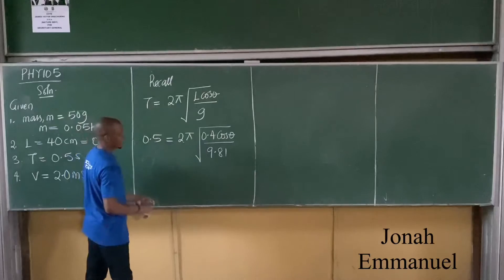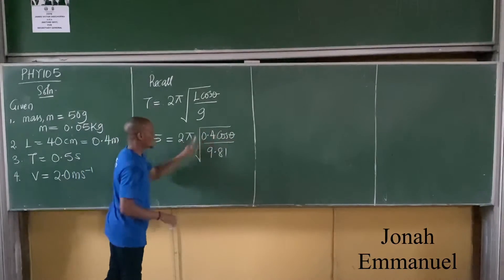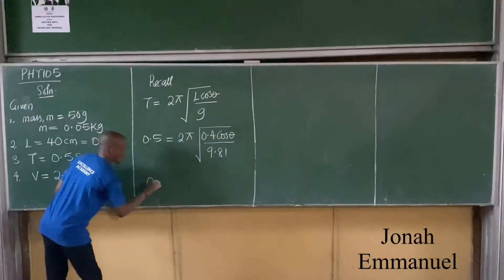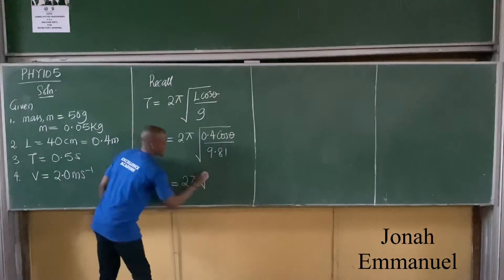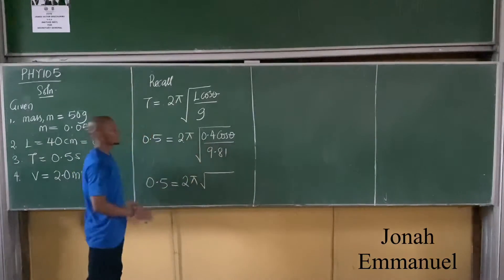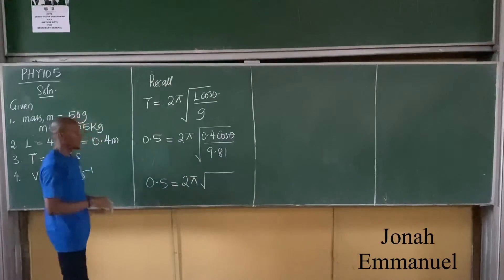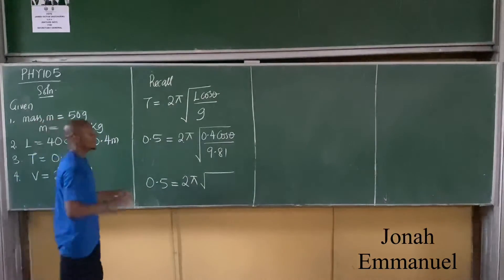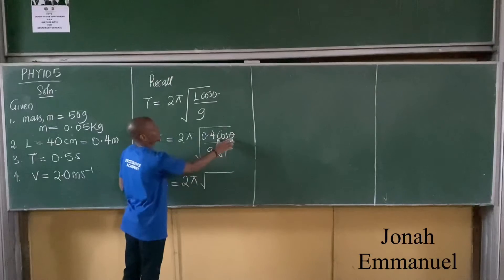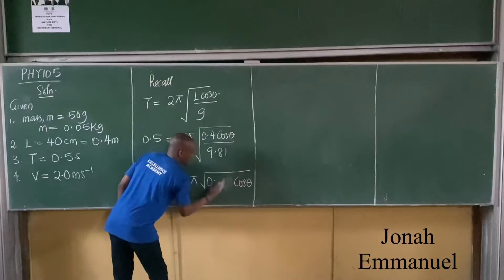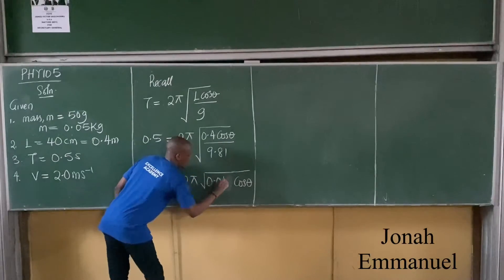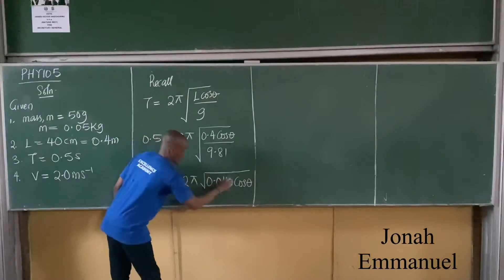I have that 0.5 is equal to 2π square root of L, which is 0.4, cos theta all over 9.8. So how do you get theta? What's the best task? Divide 0.4 over 9.8. What do you get? 0.04.